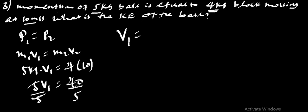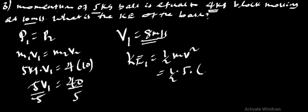What is the kinetic energy of the ball? Therefore, V is 40 divided by 5 is 8 m per second. Now, kinetic energy of the ball, which is 1 over 2 Mv squared. 1 over 2 times M1 is 5, 5 times 8 the whole square.